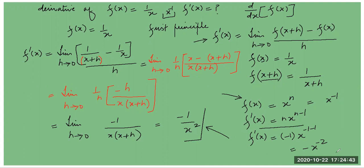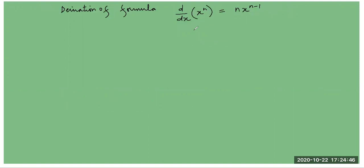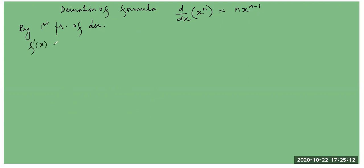Here's the general formula. So students, this I'm going to derive — the most important formula in derivatives. So again by the first principle of derivative, writing in short: f dash x, meaning derivative of x, or d/dx of f of x, is equal to limit h approaches 0 of f of x plus h minus f of x divided by h.